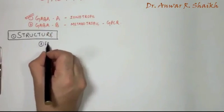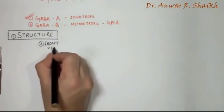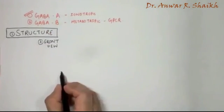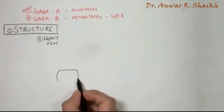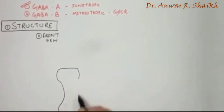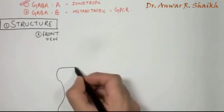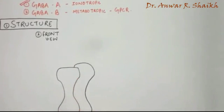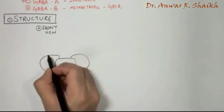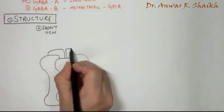There are two views. First one is the front view and second one is the top view of the receptor. Coming to the front view, the GABA receptor is pentameric. It consists of five subunits which are arranged partly extracellularly and partly intracellularly.